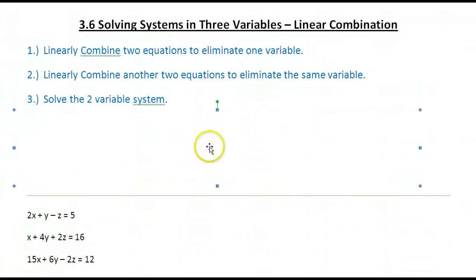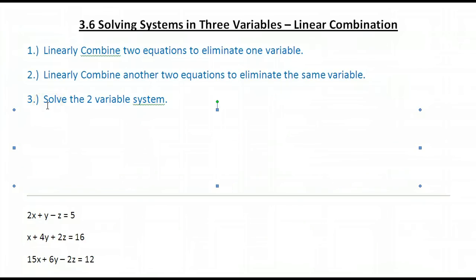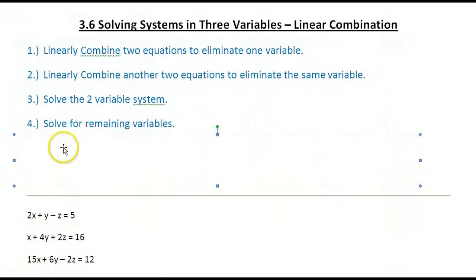If we've done this correctly, we should have a two-variable system. So Step 3 is to solve that two-variable system. Once we have that two-variable system solved, Step 4 is to solve for all the remaining variables. At this point we should have all our variables solved for, so our final step is to check our answer.